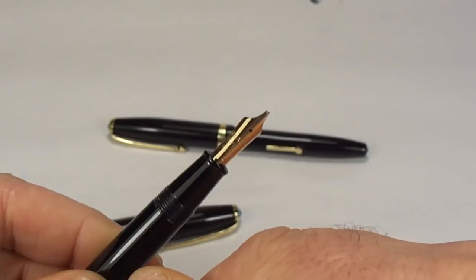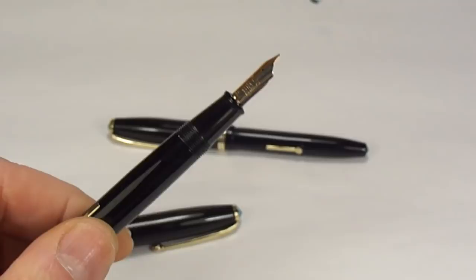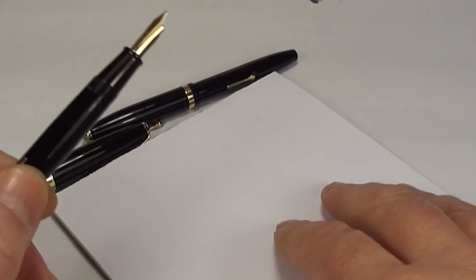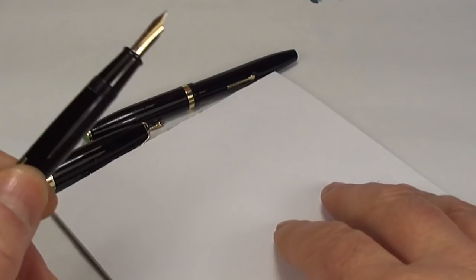Now, I know you people like to see the pens writing. I'm not going to fill them, although it's got a new sack fitted. It's, as I say, fully restored. But just so that we can see it writing, what I'll do, I'll dip the nib in the ink. Let's just give it a wipe. I've dipped it a little bit too deep there.